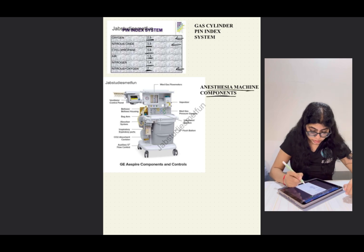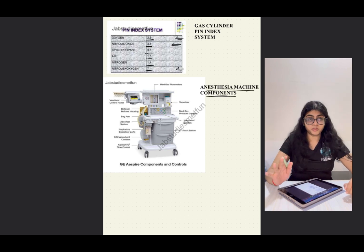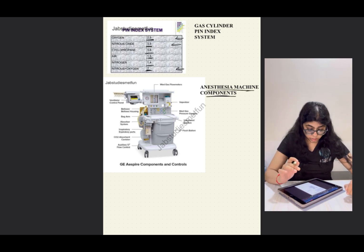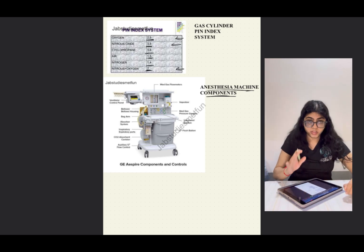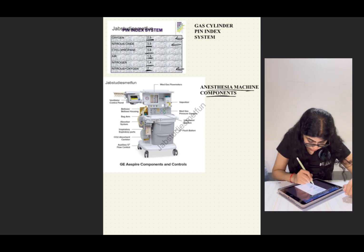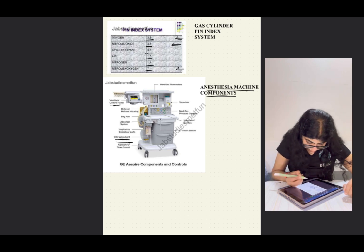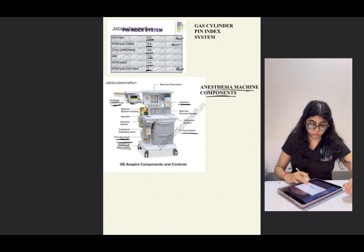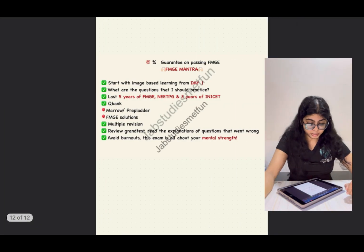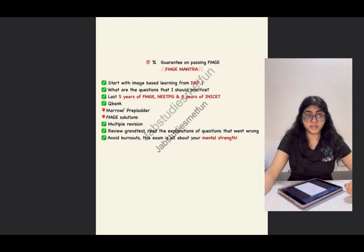The anesthesia machine components image is large and mostly not directly tested in the exam, but you should know where everything is located — the CO2 absorbent canister, ventilator control panel, vaporizer, flush button, and auxiliary flow control. That's it for your anesthesia must-know images for the FMG exam. Thank you so much.